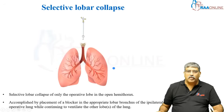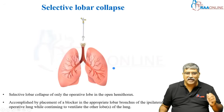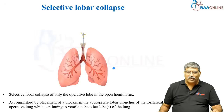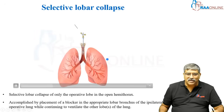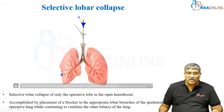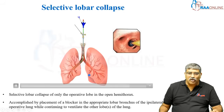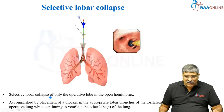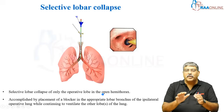Coming to selective lobe collapse to maintain oxygenation. Here we are going to use the bronchial blocker. A fiber optic scope is passed, then the bronchial blocker is passed in. I am going to selectively collapse the right lower lobe — the right lower lobe alone is collapsed. Here you perform a selective lobar collapse of the operative lobe of the hemithorax.